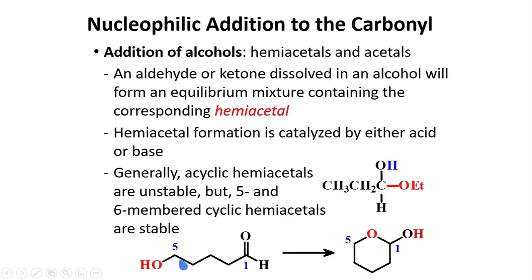Here is an example of the formation of a cyclic hemiacetal. We have a hydroxy group at position number five and a carbonyl group at position one. This hydroxy group, in the presence of an acid or a base, can attack this carbonyl carbon and form a cyclic molecule. This is more stable than the acyclic compound.